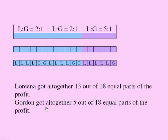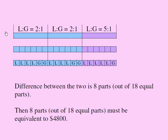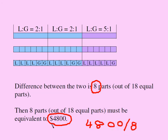So that's the summary of the previous slide. Lorena got 13, Gordon got 5. Now the question says Lorena made 4,800 dollars more than Gordon. What does that mean? Take a look at this. Lorena got 13 parts, Gordon got 5 parts, Lorena got 8 parts more. And if Lorena made 4,800 dollars more, each part has to be 4,800 divided by 8. If Lorena made 4,800 dollars more than Gordon, and Lorena got 8 parts more than Gordon.